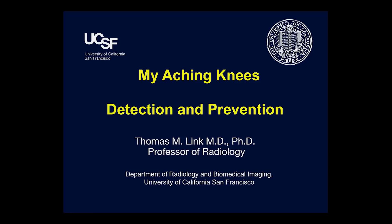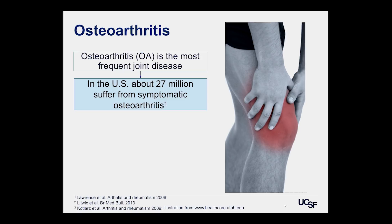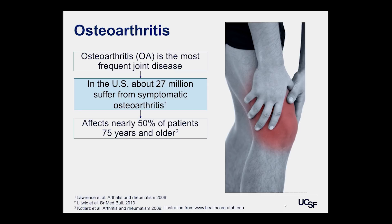My name is Thomas Link. I'm a musculoskeletal radiologist and my special expertise is in imaging of osteoarthritis and cartilage. We've heard how important and ubiquitous osteoarthritis is. Looking at the numbers, it's really impressive — in the US, approximately 27 million people suffer from osteoarthritis. Specifically, of those older than 75, about 50% have osteoarthritis.